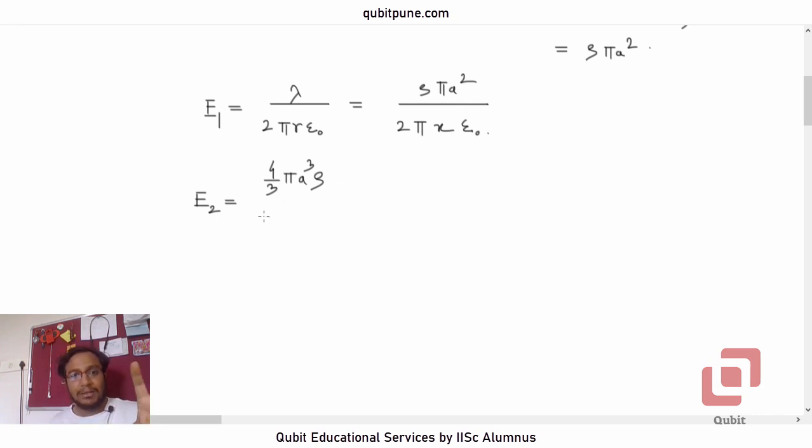For a sphere, it will behave as a point charge for locations outside it. So it will be q upon 4 pi epsilon naught r squared, and in this case it will be x squared.